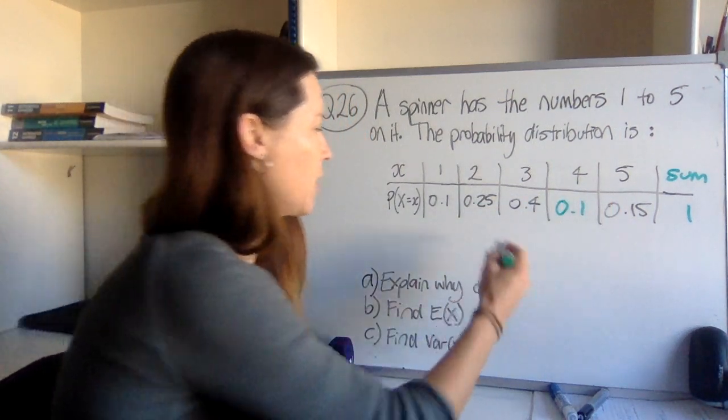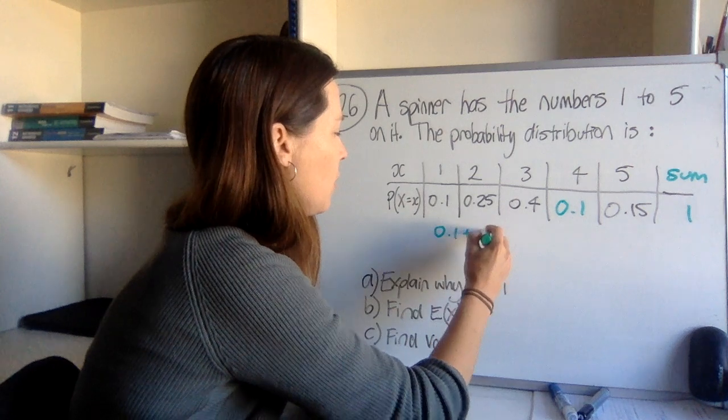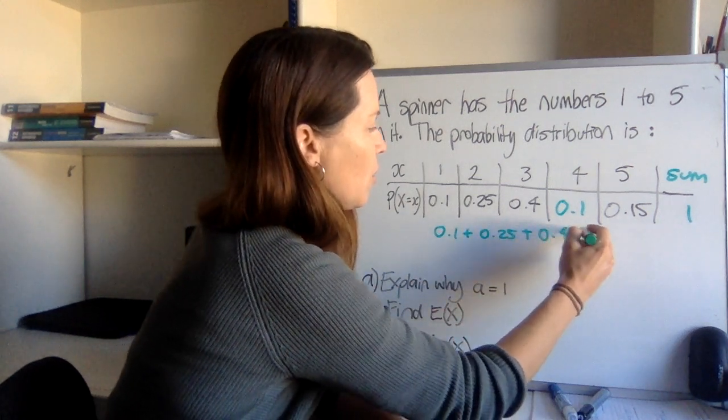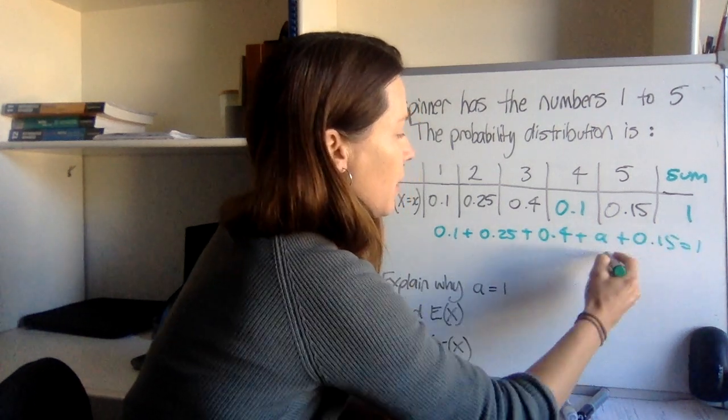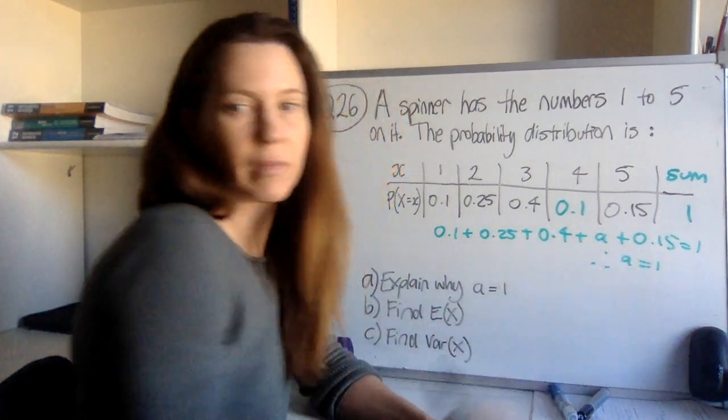And you can actually just show it, like you could put 0.1 plus 0.25 plus 0.4 plus a plus 0.15 equals 1, therefore a equals 0.1. That's probably how I'd do it.